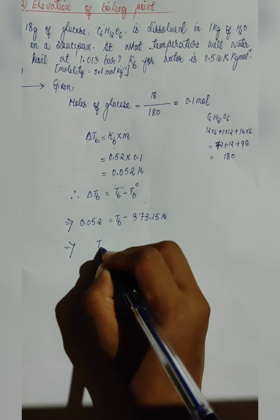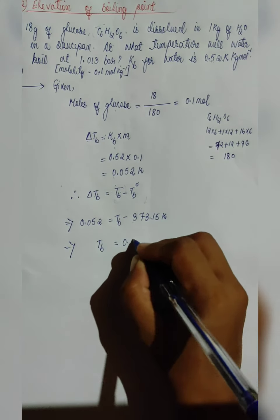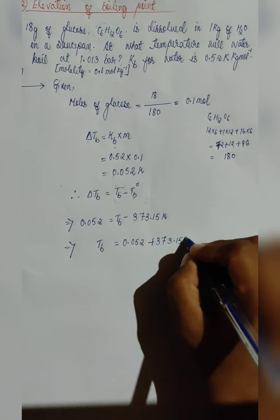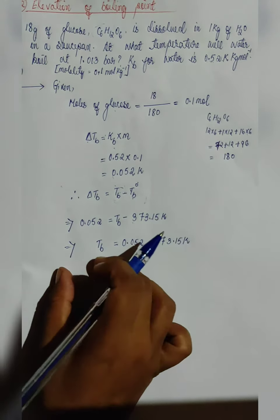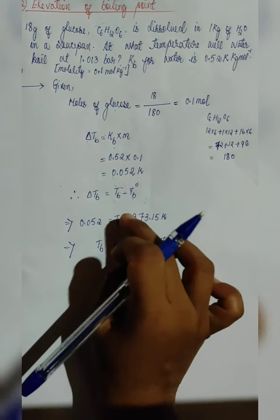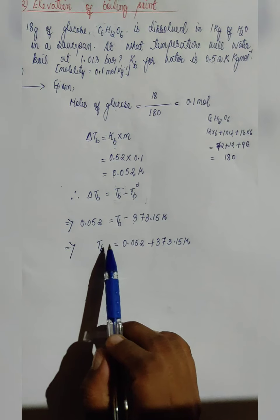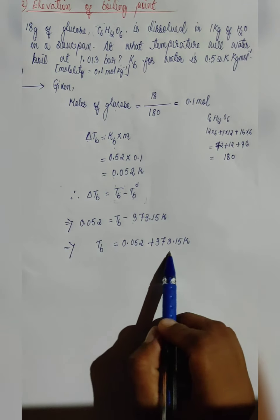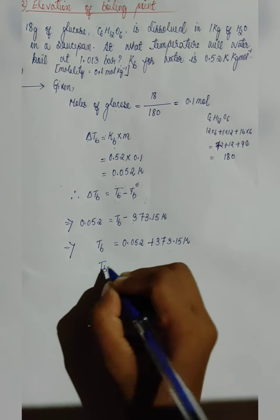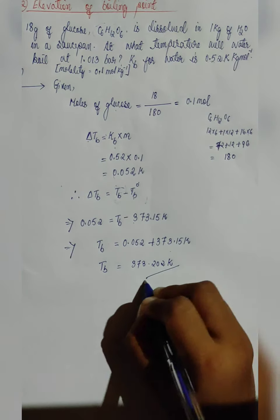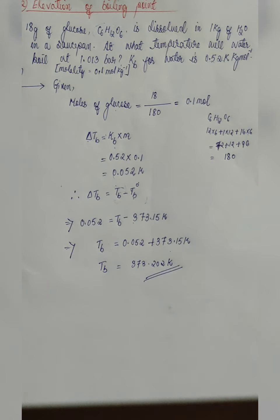Tb equals 0.052 plus 373.15 K. When 373.15 is transferred to the right hand side, minus becomes plus. Upon addition, we get Tb equal to 373.202 Kelvin. So we found out that the water will start boiling at 373.202 Kelvin.